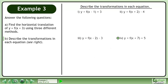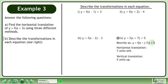The next transformation is y equals f of x plus 7 plus 5. We write the binomial inside the function with a double-sign, giving us y equals f of x minus negative 7 plus 5. h equals negative 7, so there is a horizontal translation seven units left. k equals 5, so there is a vertical translation five units up.